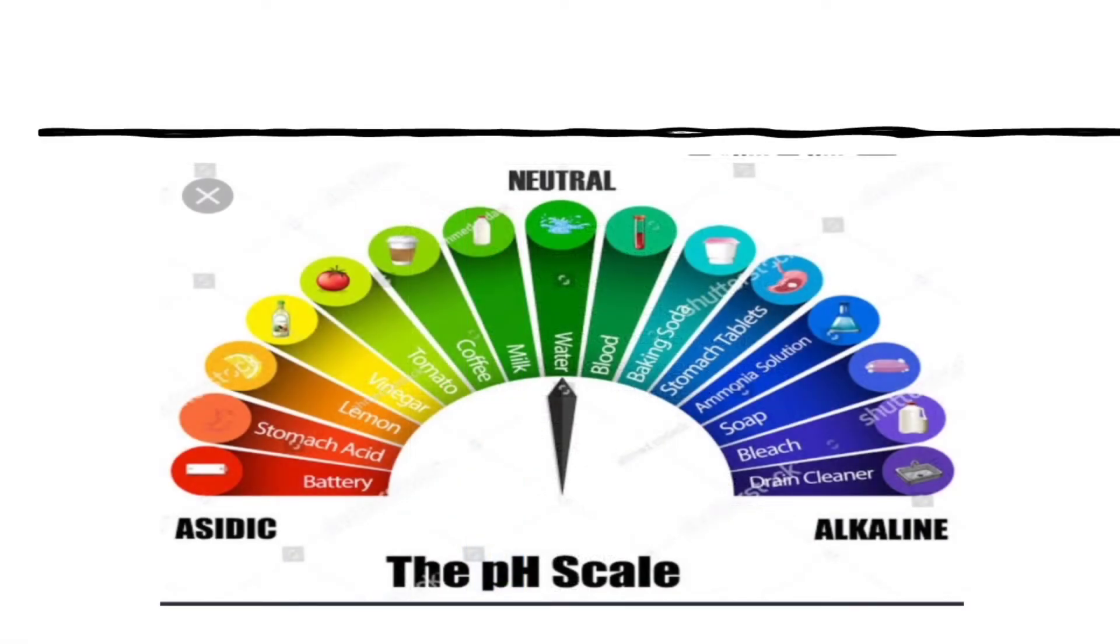In the water there is blood, baking soda, soap, ammonia solution, bleach, cleaner. This is alkaline. Alkaline has two categories: neutral, acid, and alkaline.